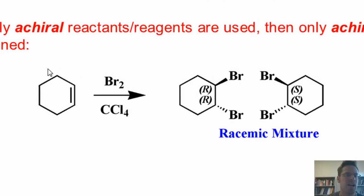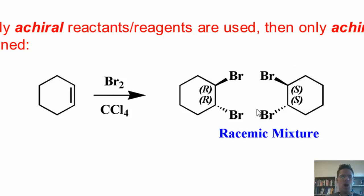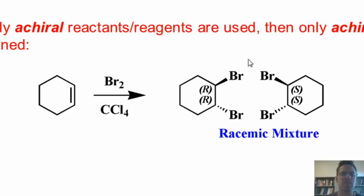Here's an example. If I take cyclohexene and treat it with bromine, from what we discussed in an earlier chapter, the two bromines always end up being trans to each other. However, I could draw two different molecules that fit that description — the molecule to the left and the molecule to the right. These two molecules are indeed enantiomers of each other. If I ran this reaction using reactants and reagents that are all achiral, I would get a completely 50-50 mixture, or racemic mixture, of both enantiomers as my products.